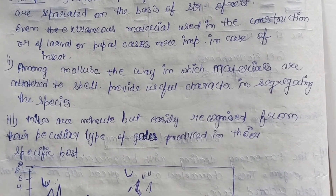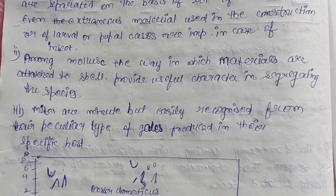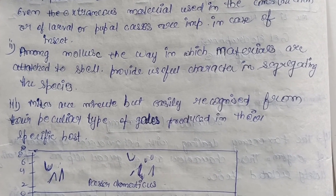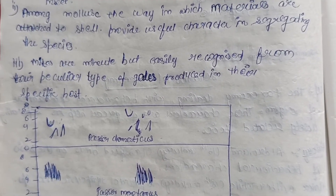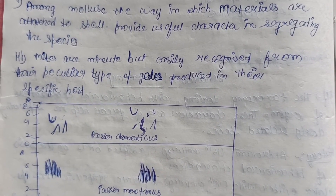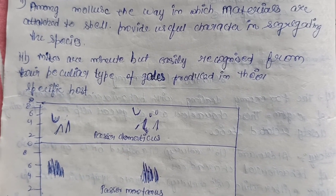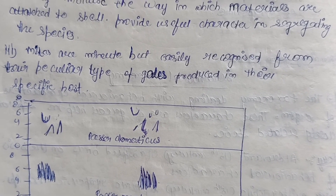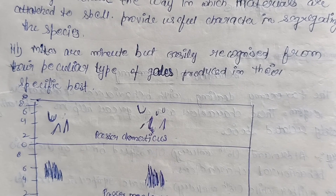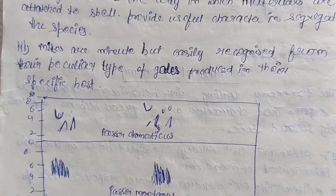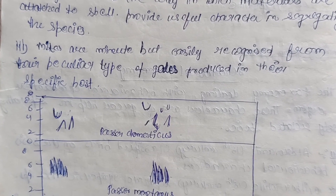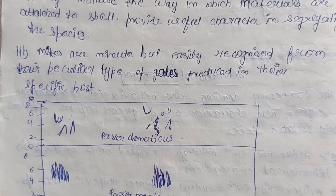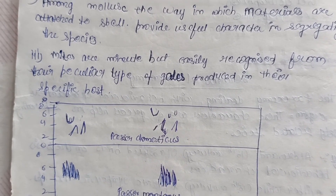Among mollusks, the way in which materials are attached to the shell provides useful characters for segregating species. Mites are minute but easily recognized from their peculiar type of galls produced in their specific host. Galls are skin conditions in animals caused by specific species of mites, not all categories, making this a basis for identification of various mite species.